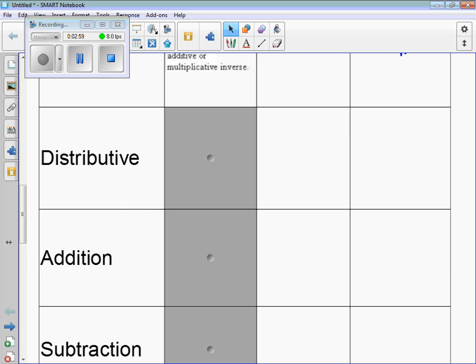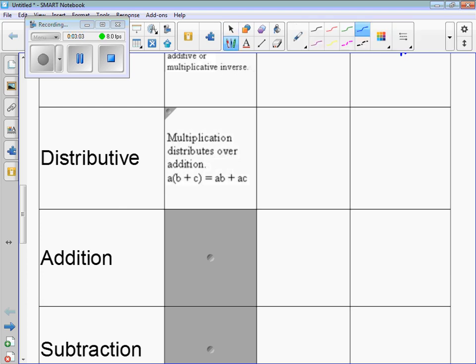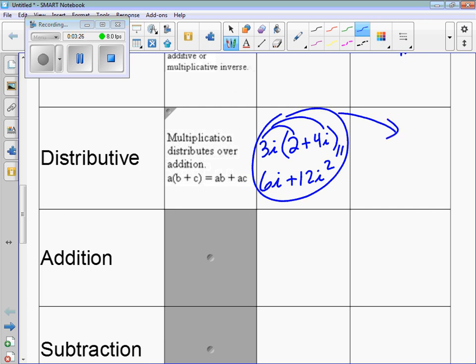Distributive works the same way as the real number system. So if you have 3i multiplying times 2 plus 4i, you can distribute this in to get 6i plus 12i squared. Distributive property. This is multiplication. This actually should be all over here.